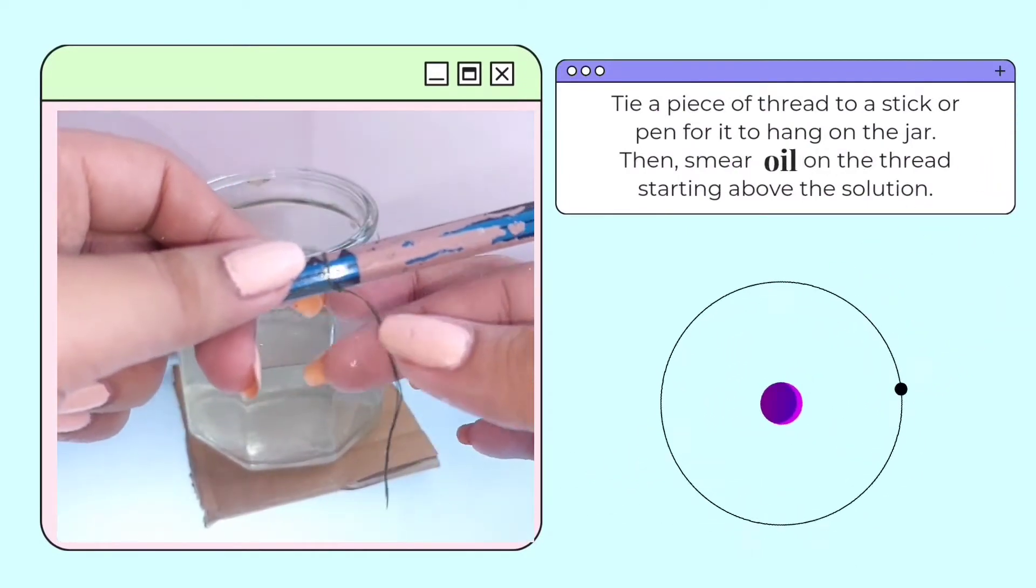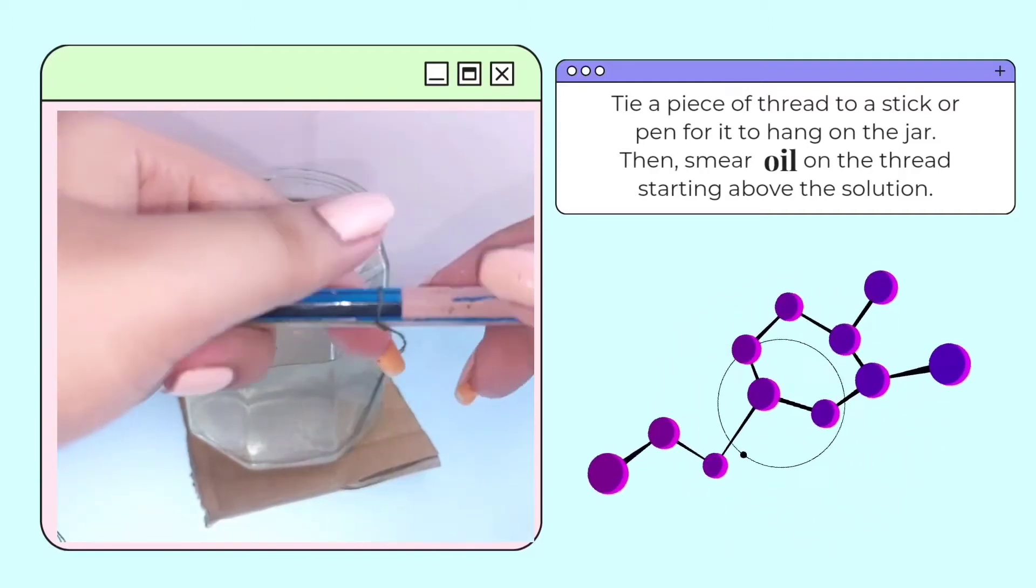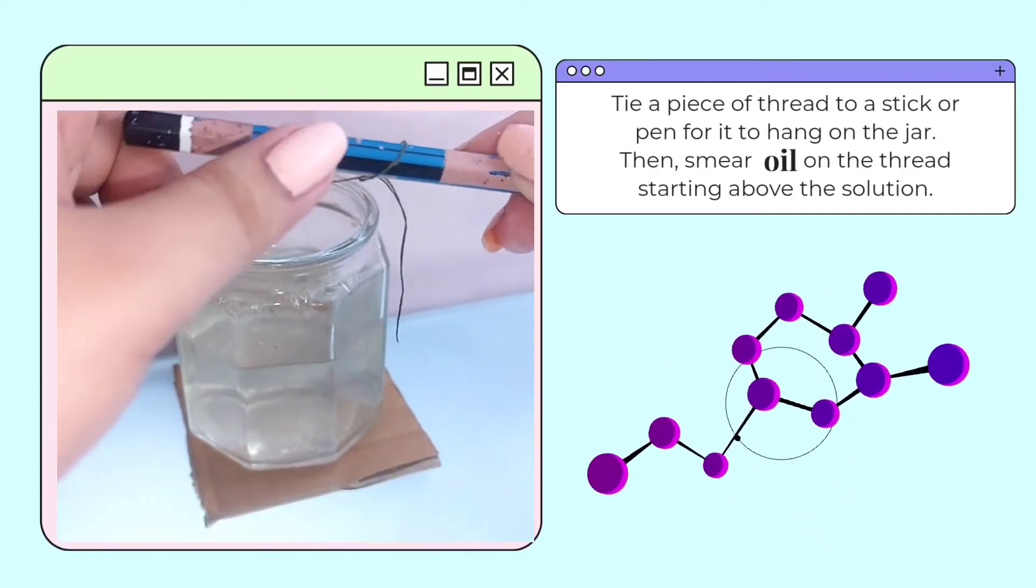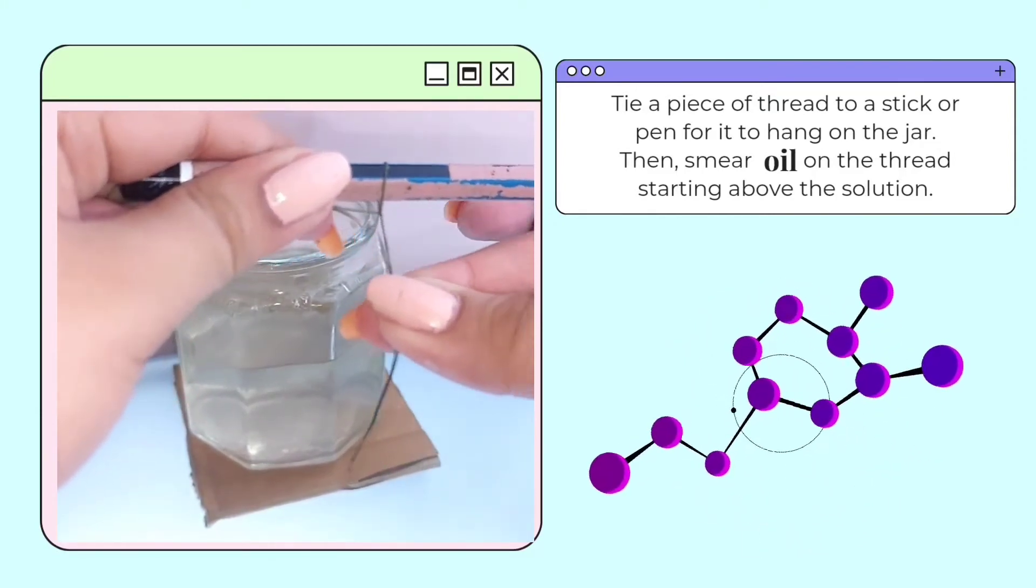Tie a piece of thread to a stick. Smear oil on the part of the thread that will be above the solution, so when the crystal starts to form on the thread, they will not attach to the thread that is not below the solution.